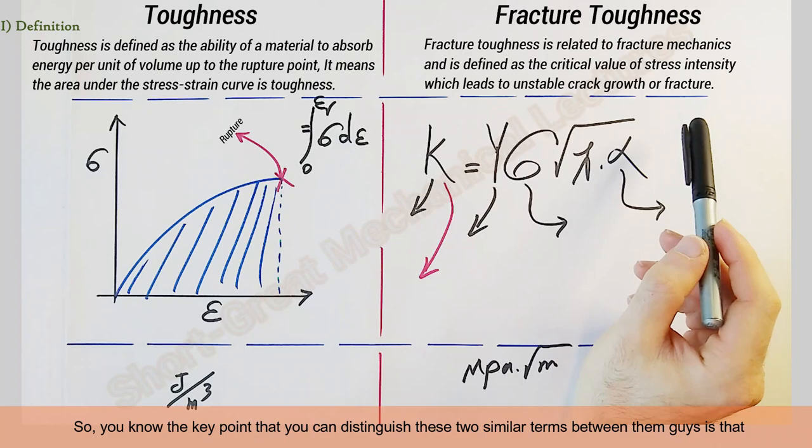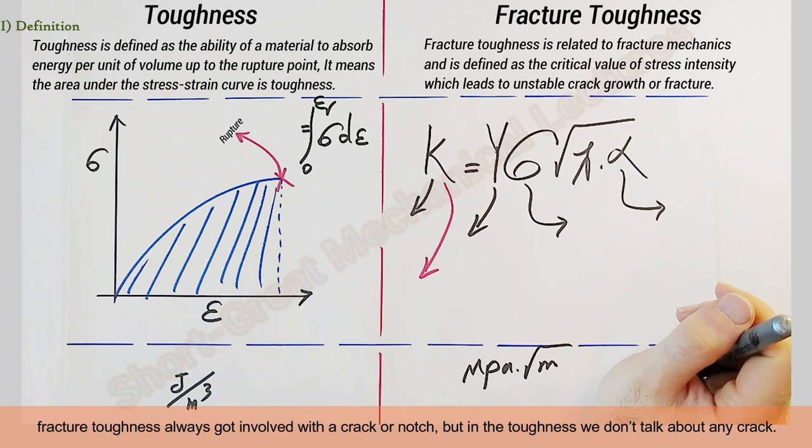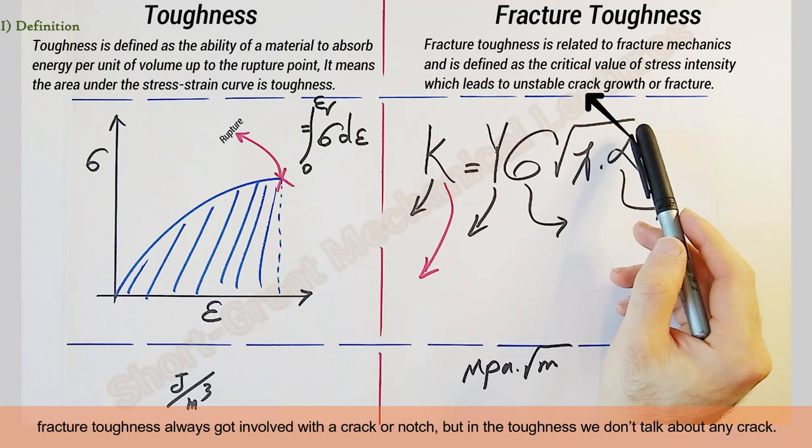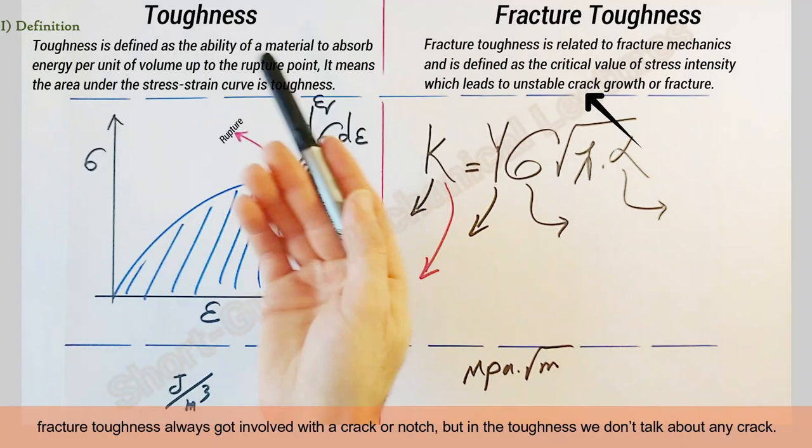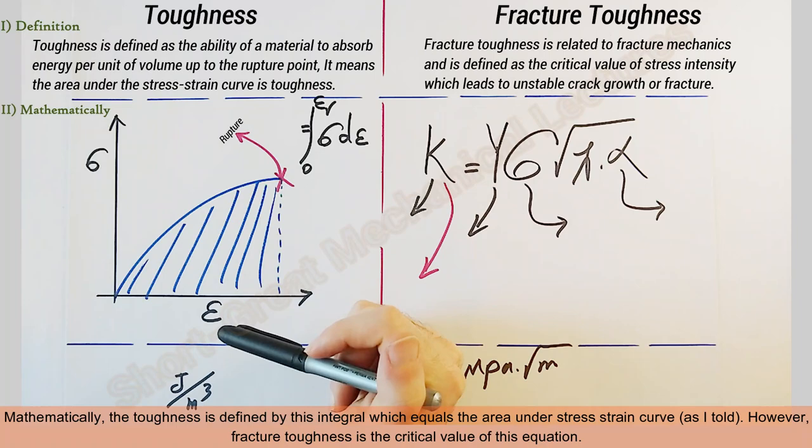The key point that you can distinguish these two similar terms is that fracture toughness always involves a crack or notch. But in toughness we don't talk about any crack.